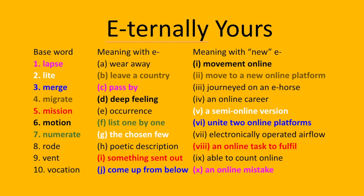To enumerate is to list one by one. But as an adjective, 'numerate' — pronounced a little bit differently — means able to count. So, e-numerate: able to count online. To erode is to wear away — you talk about soil erosion and that sort of thing. But e-road has become the past tense of e-ride.